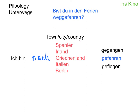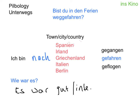You'll probably be asked the question as to how your holiday was, which would be: wie war es? — How was it? Depending on how your holiday went: es war gut, es war interessant, or even if it was terrible: es war schlecht. In which case, you're probably not going to go there again.